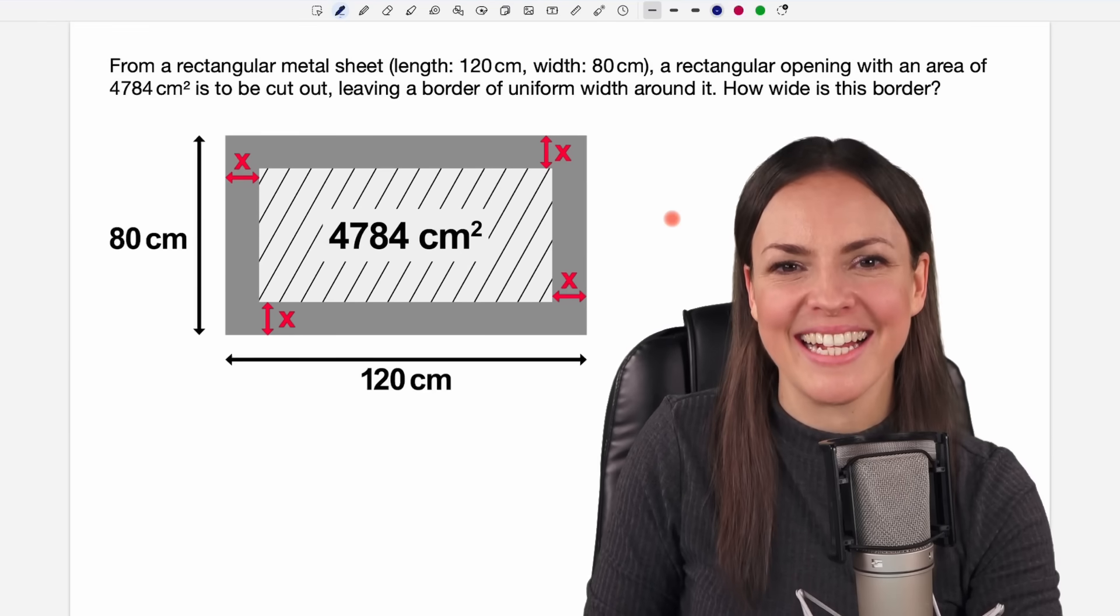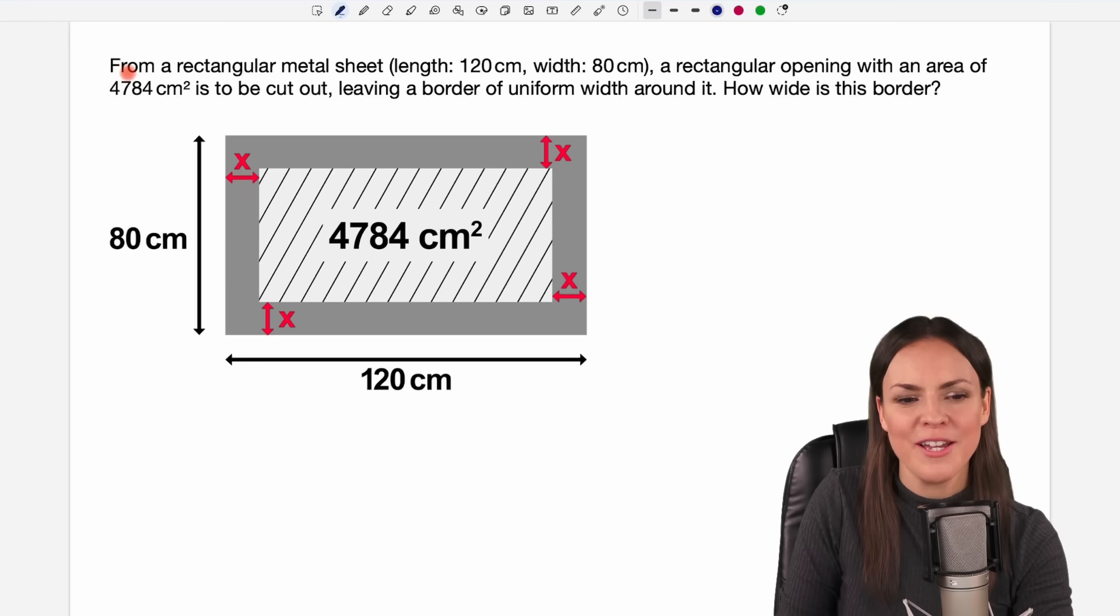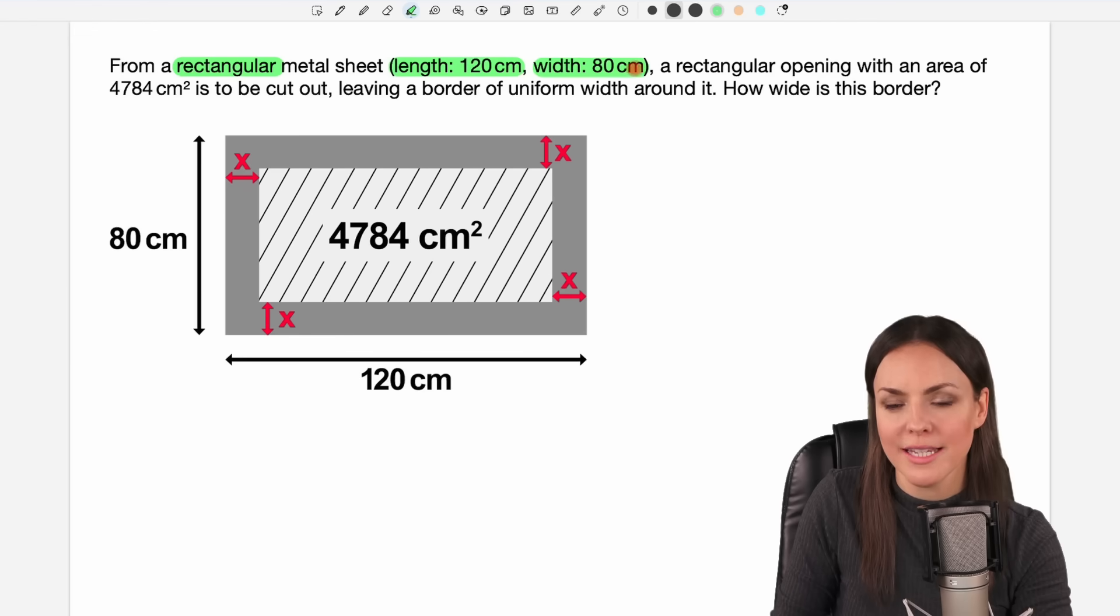Hello my lovelies, it's Susanna and today I want to show you how to solve this problem. From a rectangular metal sheet, length 120 centimeters, width 80 centimeters, a rectangular opening with an area of 4,784 square centimeters is to be cut out, leaving a border of uniform width around it. How wide is this border?